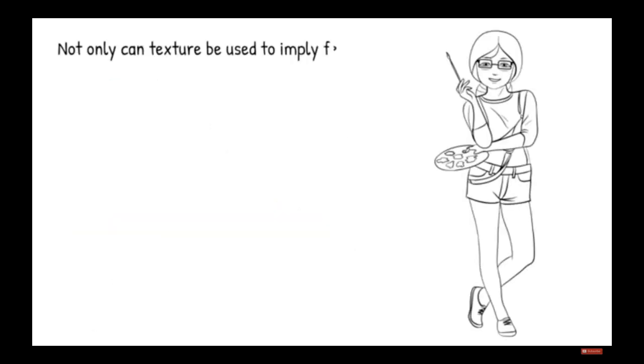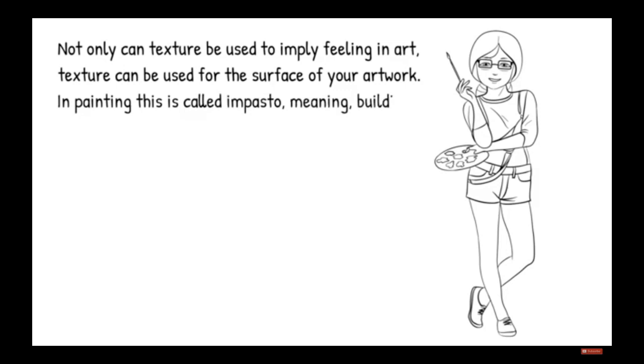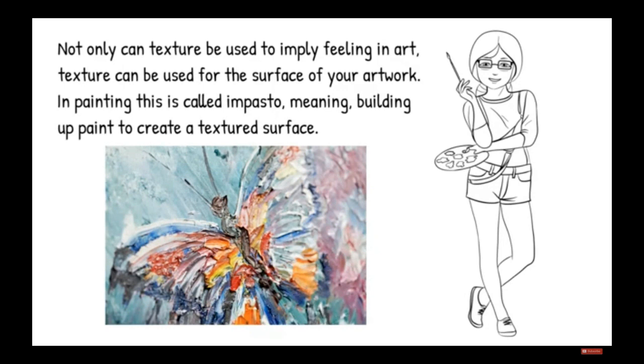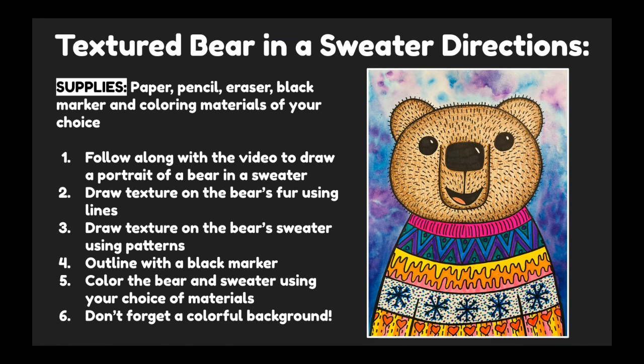Not only can texture be used to imply feeling in art, texture can also be used for the surface of your artwork. In painting, this is called impasto, meaning building up paint to create a textured surface. Now that we've learned about the element of art texture and how we can draw it in our art to make it look like something feels a certain way, let's go over the directions for our textured bear in a sweater.